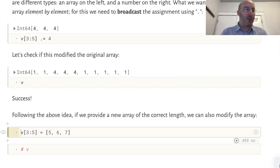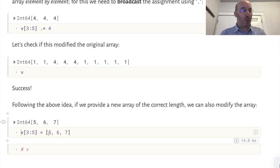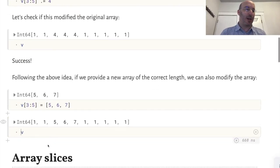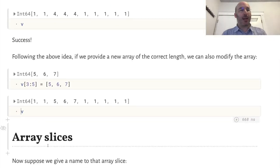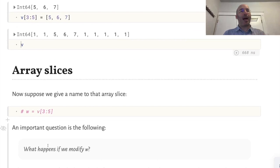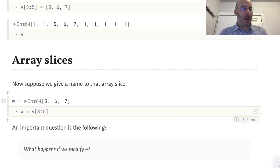We can also assign a new array to those elements. Now let's think about giving a name to this piece of the array and manipulating the array via that new name. Let's call w the slice of v from 3 to 5.